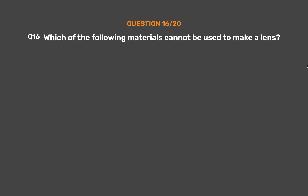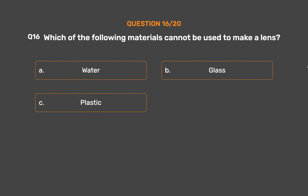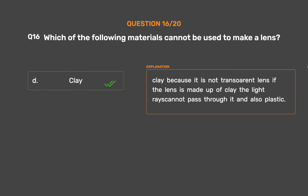Question number 16. Which of the following materials cannot be used to make a lens? Option A, water; option B, glass; option C, plastic; option D, clay. The correct answer is option D, clay, because it is not transparent — if the lens is made of clay, light rays cannot pass through it.